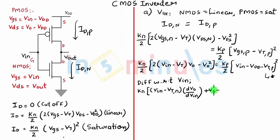...plus Vout minus Vout times DVout by DVIN, equal to KP times (VIN minus VDD minus VTP).